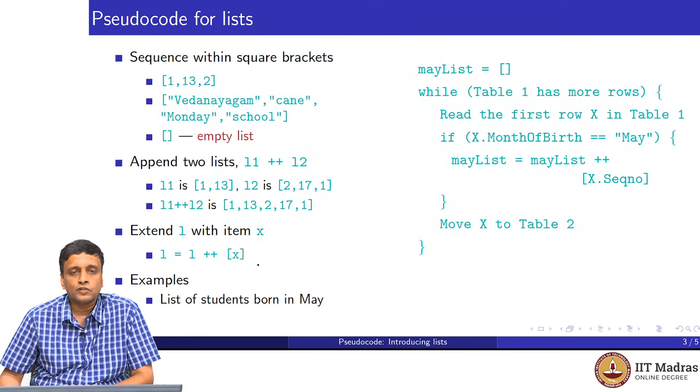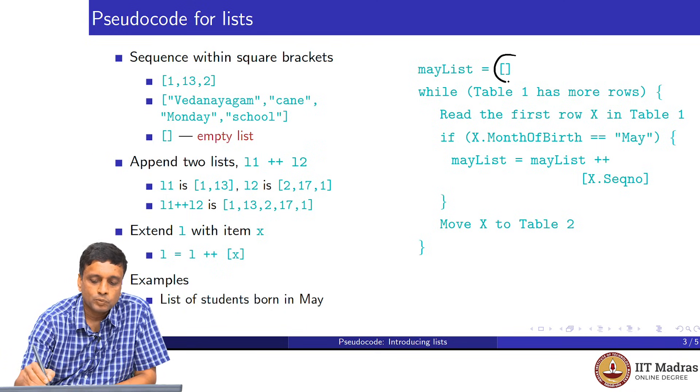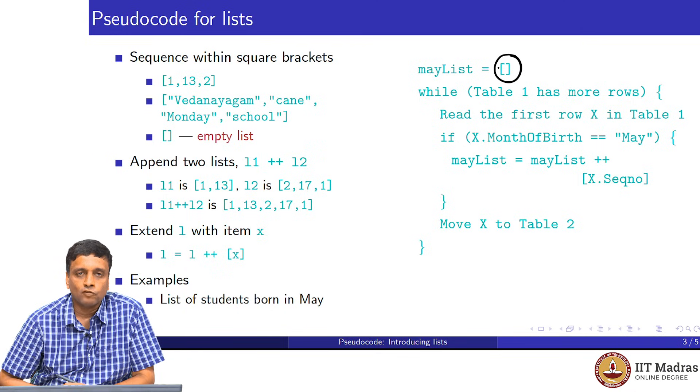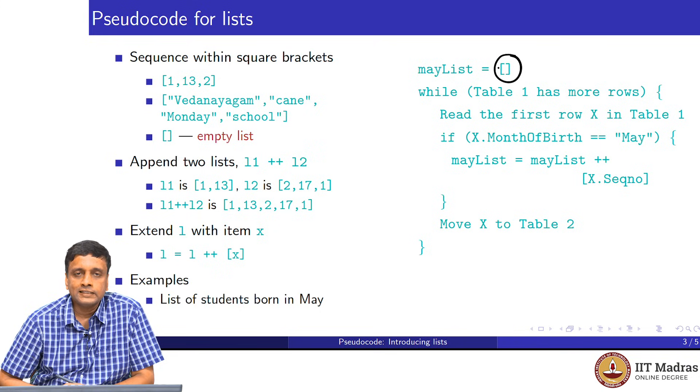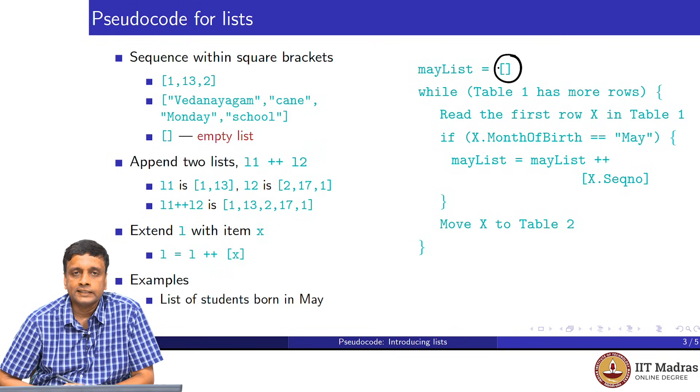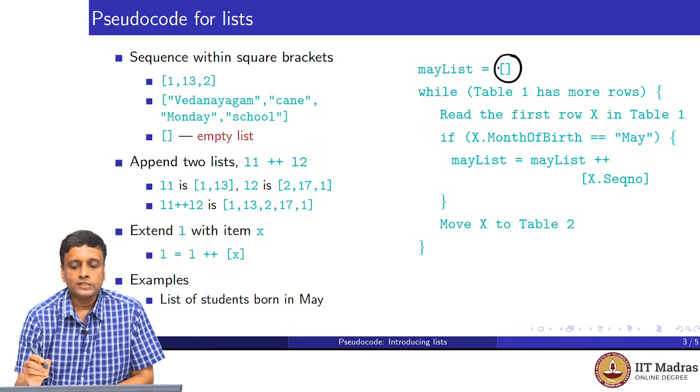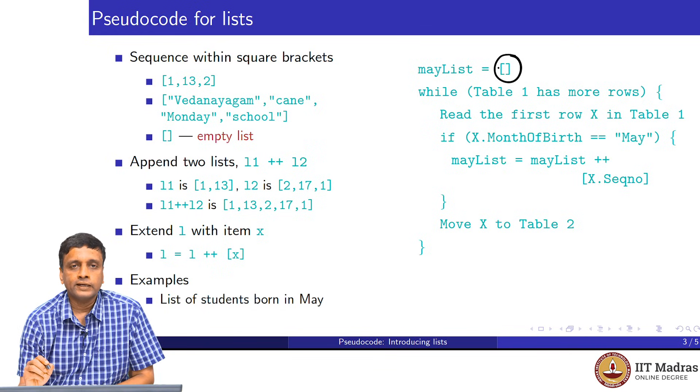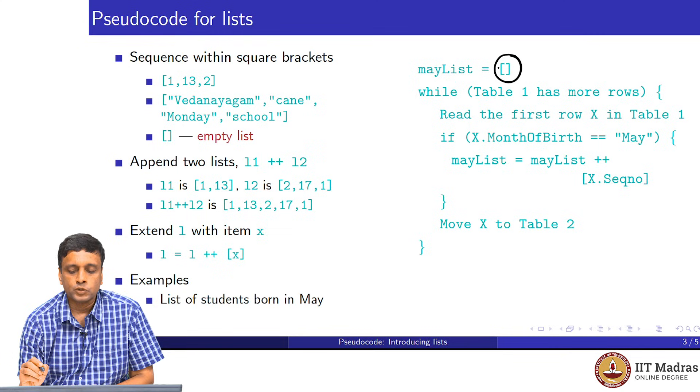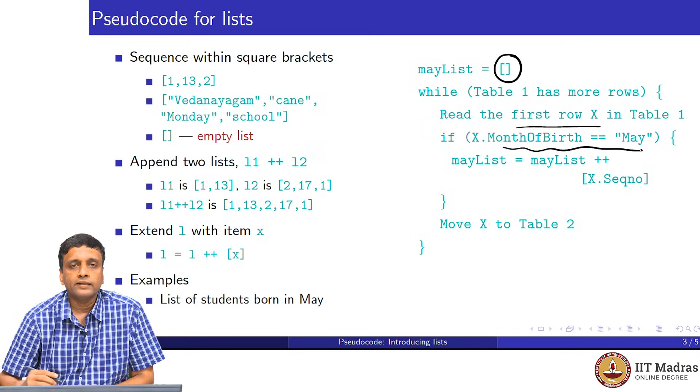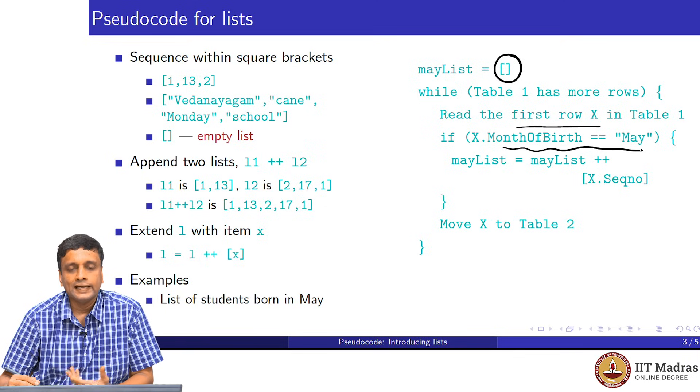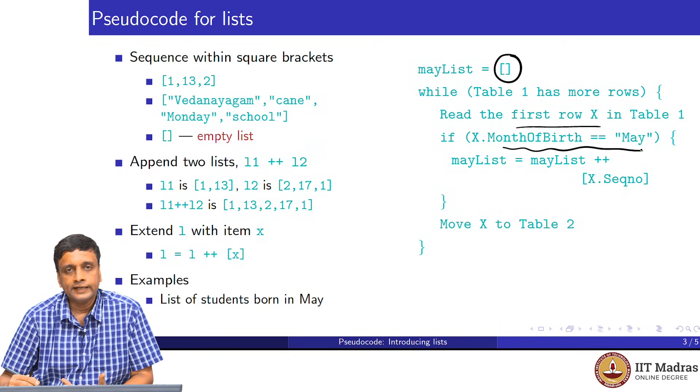In order to extract the list of students from our school database, we want the list of students who are born in May. What we do is we initialize this list to be empty. We want a May list. May list is the list of all students born in May. We initially say there are no students born in May, this is like initializing a counter to zero. Now, we use this table format. We assume that our data is given to us as a table with each row representing one student. While the table has more rows, we pick up the first row.